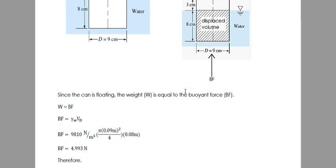So if we simplify, BF is equal to gamma of water, which is 9810 N per cubic meter, times the displaced volume.